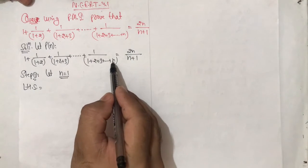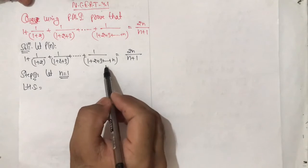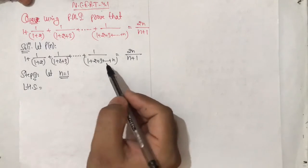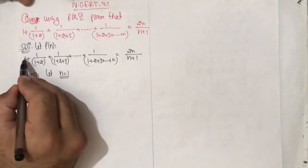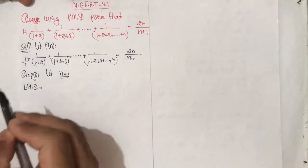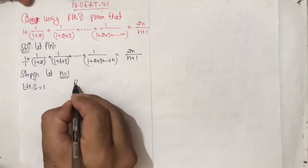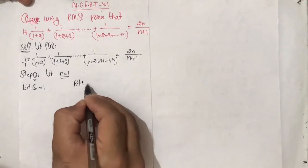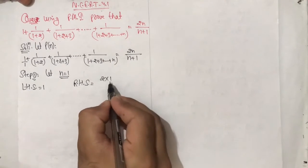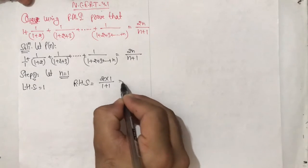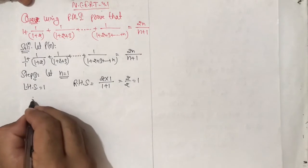If we put n equal to 1, we simply get 1. That means the fraction's denominator should end at 1, which is 1 upon 1. So LHS equals 1. For RHS, putting n equal to 1: 2 into 1 upon (1 plus 1), that is 2 upon 2, which is equal to 1.